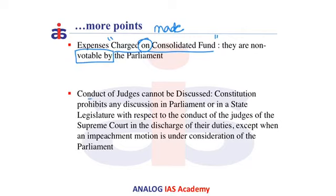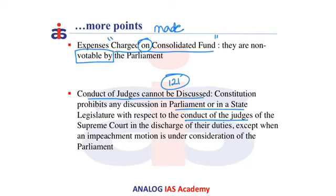The fourth point is that the conduct of judges cannot be discussed. Article 121 of the Indian Constitution speaks about this provision, where discussion in the Parliament or in a State Legislature cannot happen regarding the conduct of the judges or any of the judgments made by these judges in the Supreme Court, except when an impeachment or removal motion of the judges is being carried out in the Parliament.